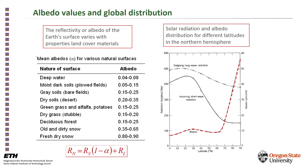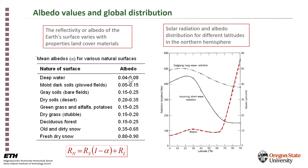What are the values of albedo? The whiter the surface, the higher the albedo. Fresh, dry snow will have an albedo of 0.8 or 0.9 — in other words, 90% of the shortwave radiation on snow will be reflected back to the atmosphere. That's why you need sunglasses when ski touring on a bright day. Whereas deep water has a very low albedo — only about 5% of shortwave radiation is reflected. Soils fall somewhere in between, with about 10 to 20% of the radiation reflected back to the atmosphere.